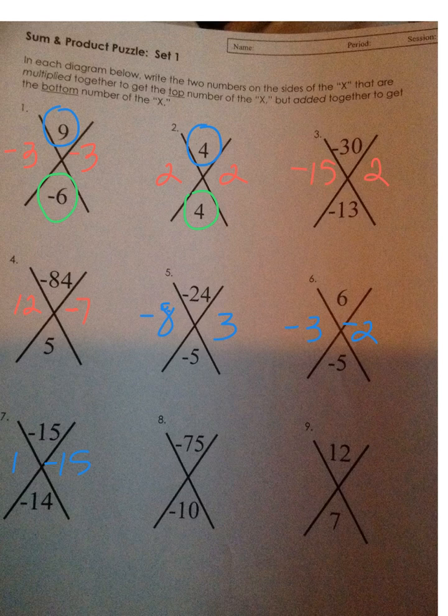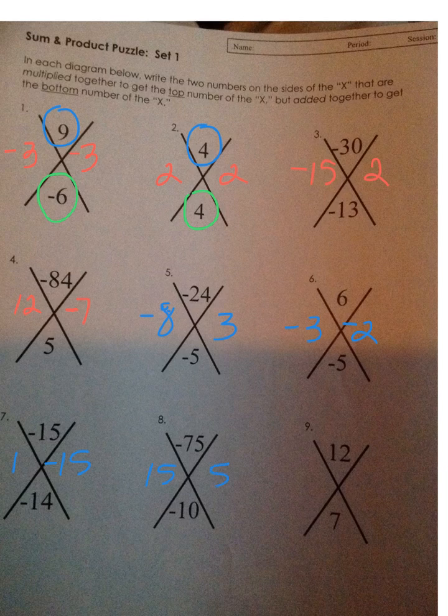Negative 75 and 10. What two numbers multiply to get me to negative 75 that add to get me to negative 10? I need a negative, and I need to be able to subtract to get me to 10. Looking at factors: 75, 15, and 5 — and I need negative 10, so I need a negative 15.